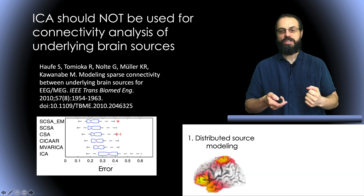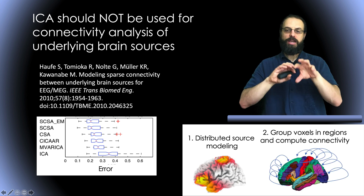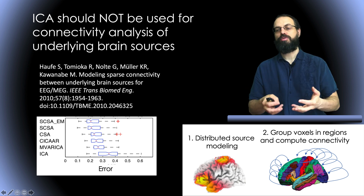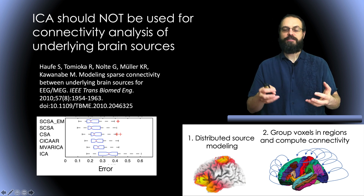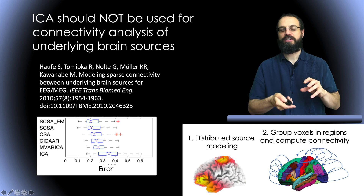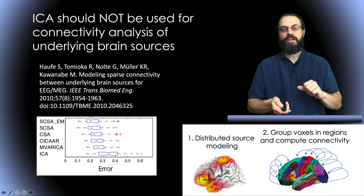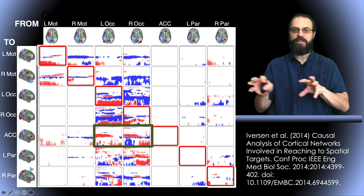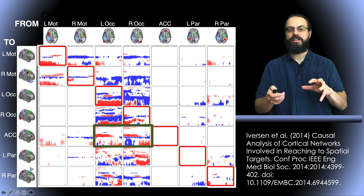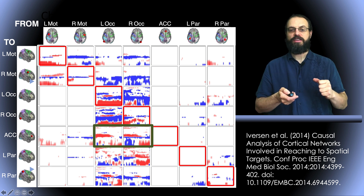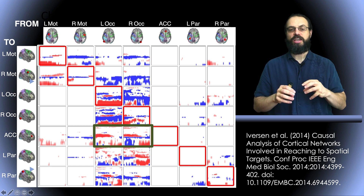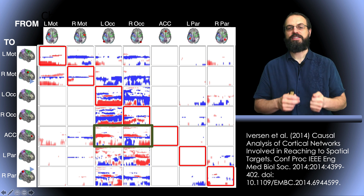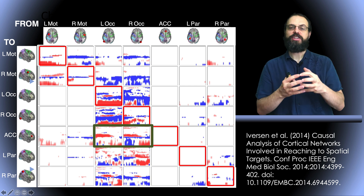The field is currently geared towards using distributed source modeling, parcellating the brain into different areas, and calculating connectivity between regions. This approach has its own challenges because ICA is data-driven — it finds sources specific to each subject. We have published an article on using ICA to calculate connectivity analysis using seven different brain areas and Granger causality, showing that ICA does a good job in this specific case and yields relevant connectivity results.